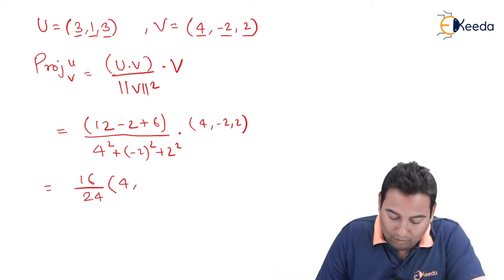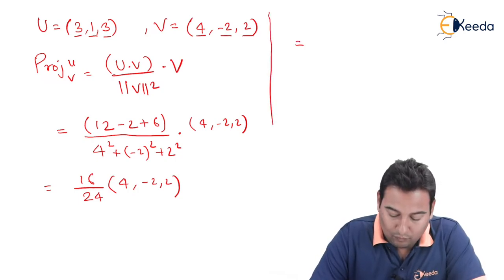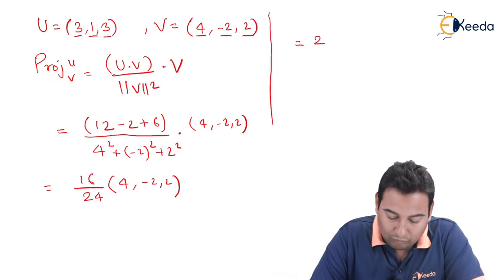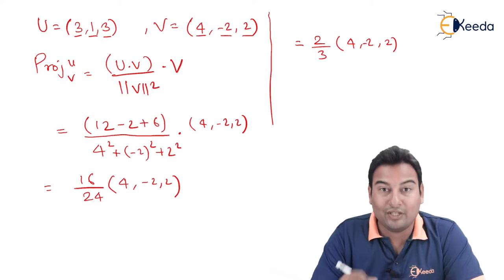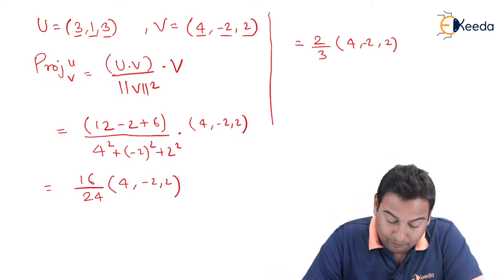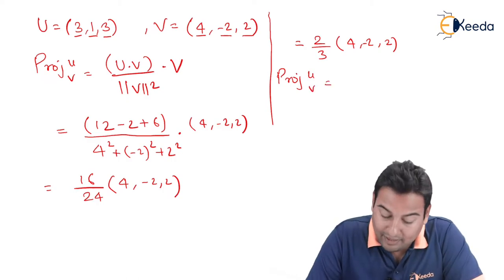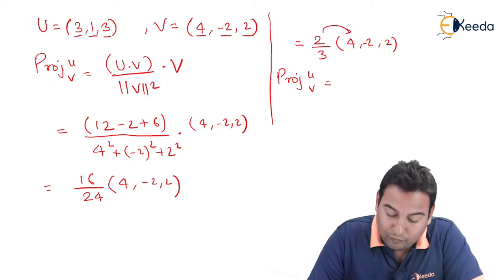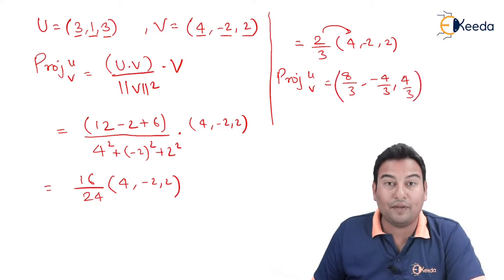Inside we have (4,-2,2), which equals 2 by 3 times (4,-2,2). Just multiply 2 by 3 inside. Therefore, projection of u on v is, if 2 by 3 is multiplied inside, that will be (8/3, -4/3, 4/3). This is your projection of u on v.